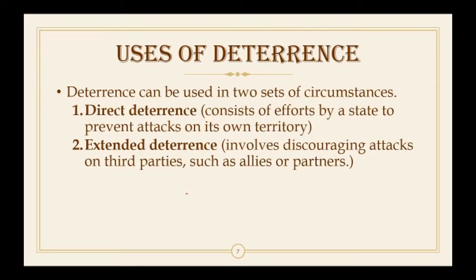Deterrence can be used in two circumstances: direct deterrence and extended deterrence. Direct deterrence involves a state protecting its own territory from being attacked. Extended deterrence involves discouraging attacks on third parties such as allies or partners. For example, during the Cold War, the US prevented the Soviet Union from attacking European countries by creating NATO — that was extended deterrence in action.